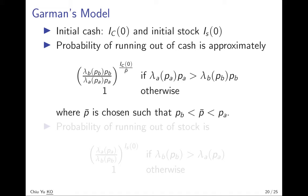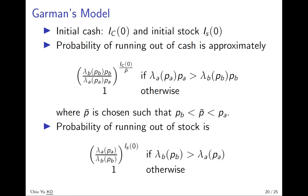So lambda A P A is bigger than lambda P B, otherwise it is always run out of cache. Similarly, running out of stock is lambda A over P B, so lambda A over lambda B, because stock gets out at rate lambda A and gets in at lambda B.